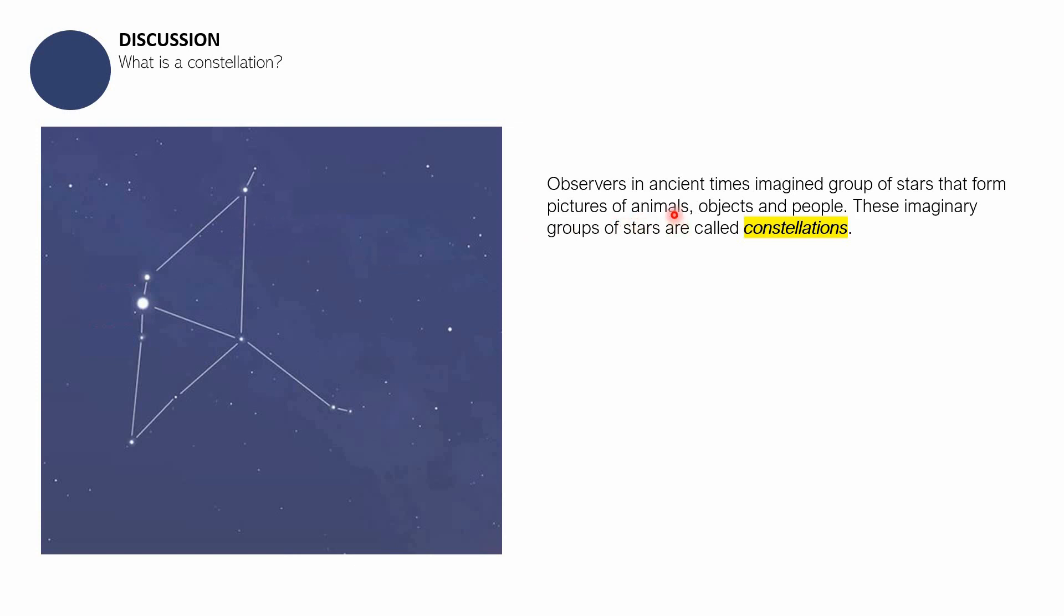When it comes to objects naman, may mga constellations like compasses and telescopes. And then may people naman, halimbawa, Cassiopeia or Orion. Many of these constellations have names that can be traced back to early Babylonians and Greek civilization. But nearly all cultures have different names for the constellations.